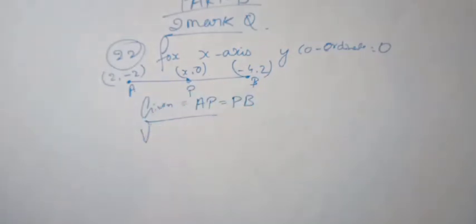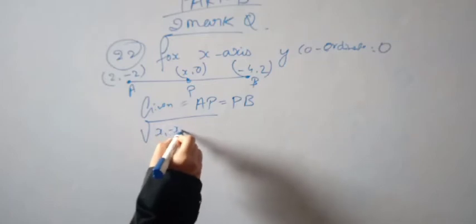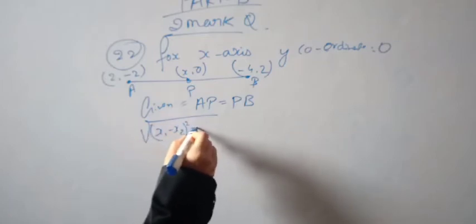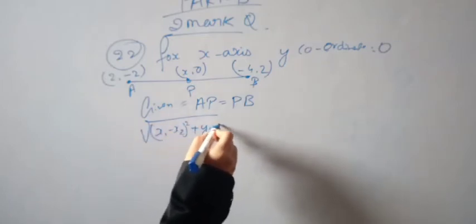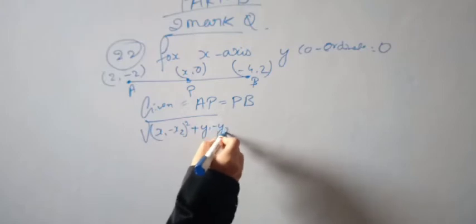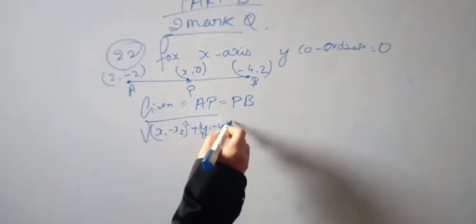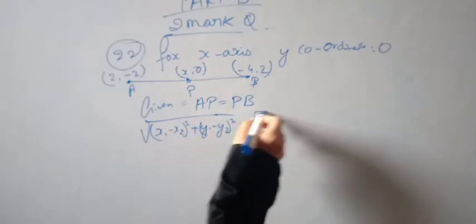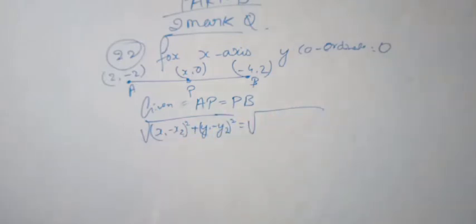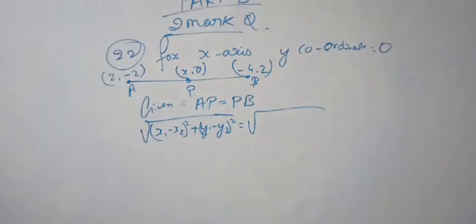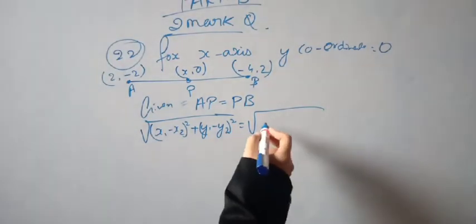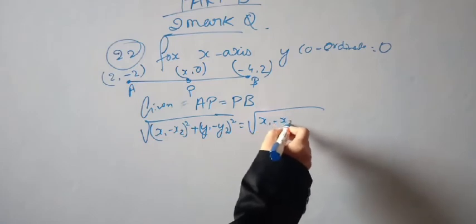According to the question, AP is equal to BP. Let's find out the x-axis point. The x-axis point P has coordinates (x, 0), so AP is equal to BP.